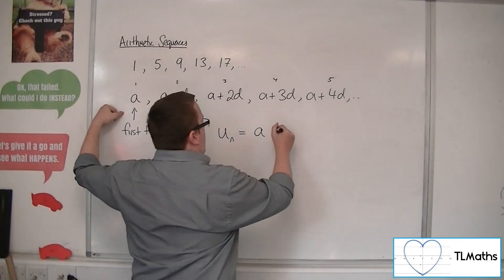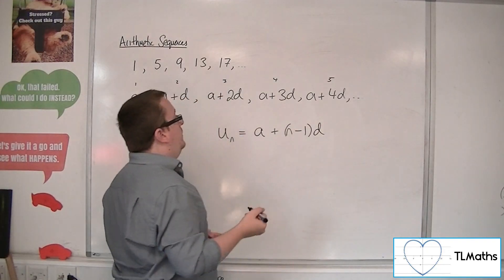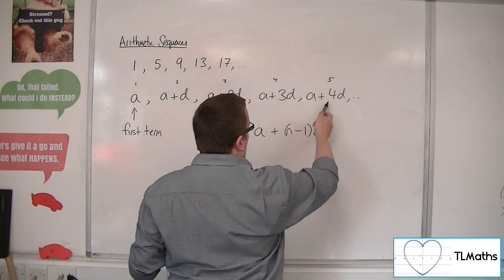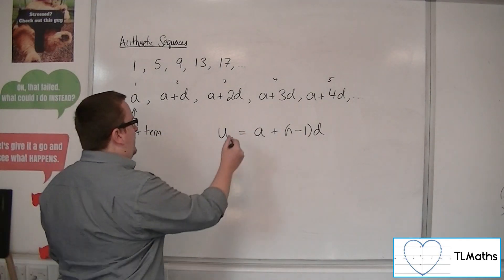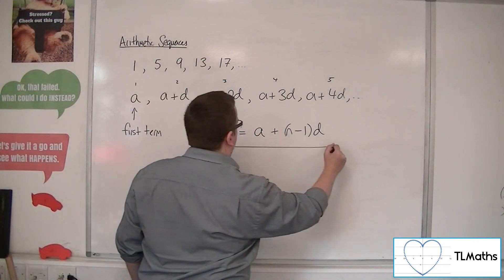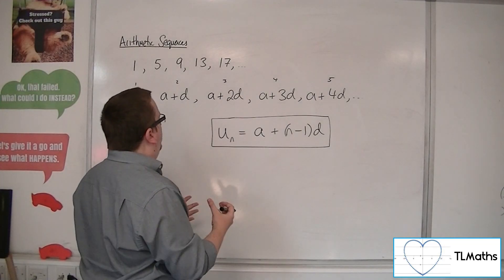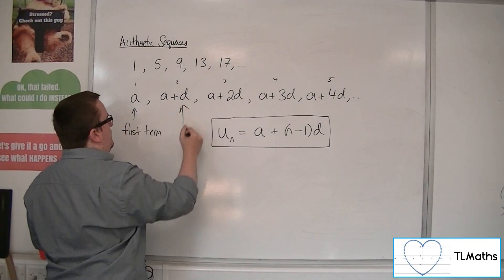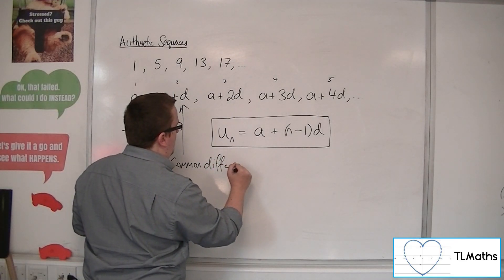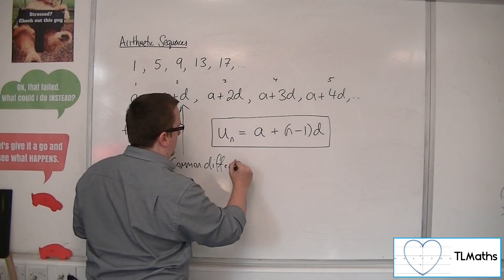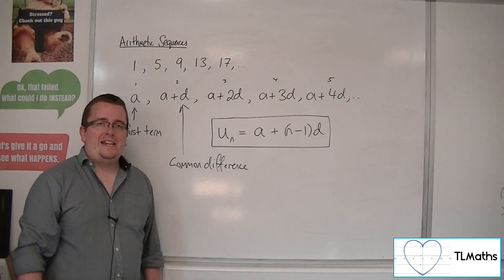So you need n minus 1 lots of the D. That will give, when n is 5, the 4D; when n is 1, you'll get 0D. And so that is the nth term of an arithmetic sequence, where A is the first term and D is what we refer to as the common difference — the amount that you are adding on or subtracting each time.